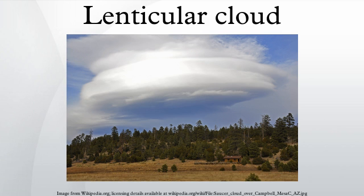Where stable moist air flows over a mountain or a range of mountains, a series of large-scale standing waves may form on the downwind side. If the temperature at the crest of the wave drops to the dew point, moisture in the air may condense to form lenticular clouds. As the moist air moves back down into the trough of the wave, the cloud may evaporate back into water vapor.